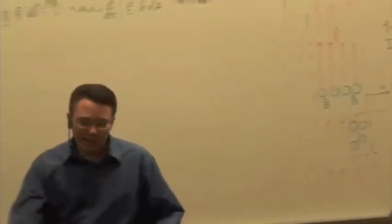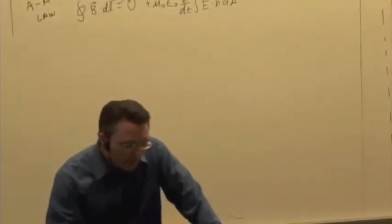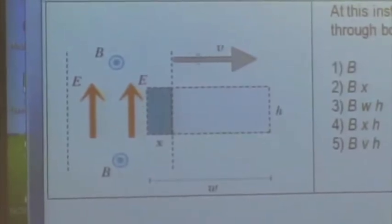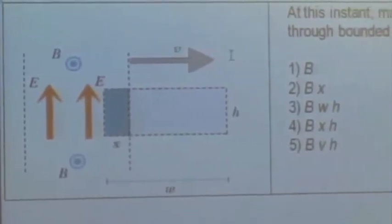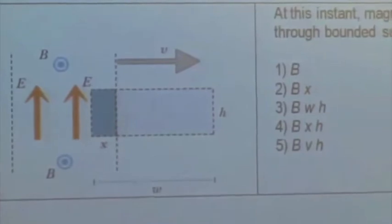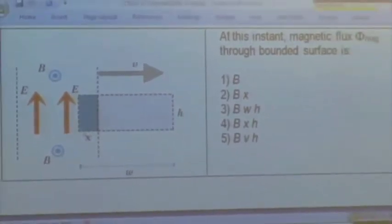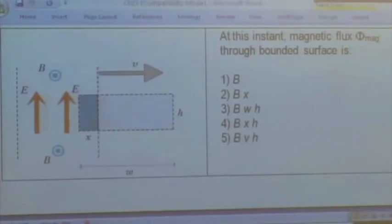So here's our slab of field. Here's the magnetic field pointing out towards us. Here's the electric field pointing up. The whole thing is moving to the right with speed v. We're going to call the part of the loop width w and height h. The distance inside the non-zero field region is x.